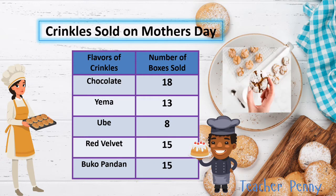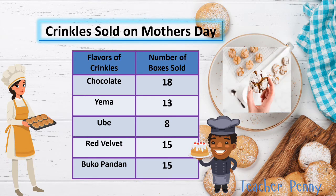For chocolate, we have 18 boxes sold. For yam flavor, 13 boxes sold. For ube, 8. Red velvet, 15. Buko pandan, 15 boxes sold.